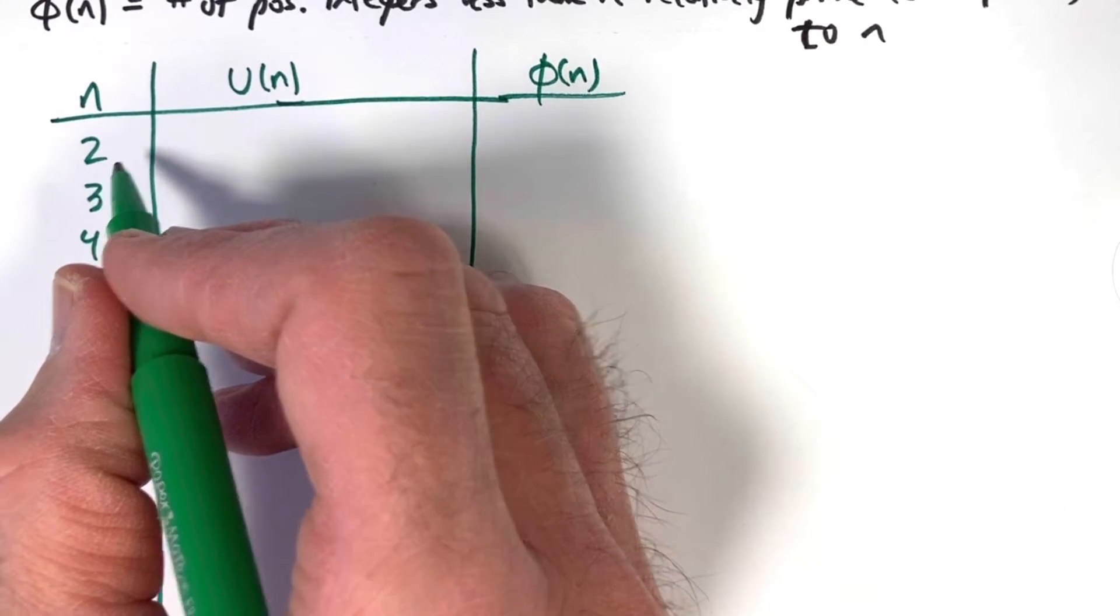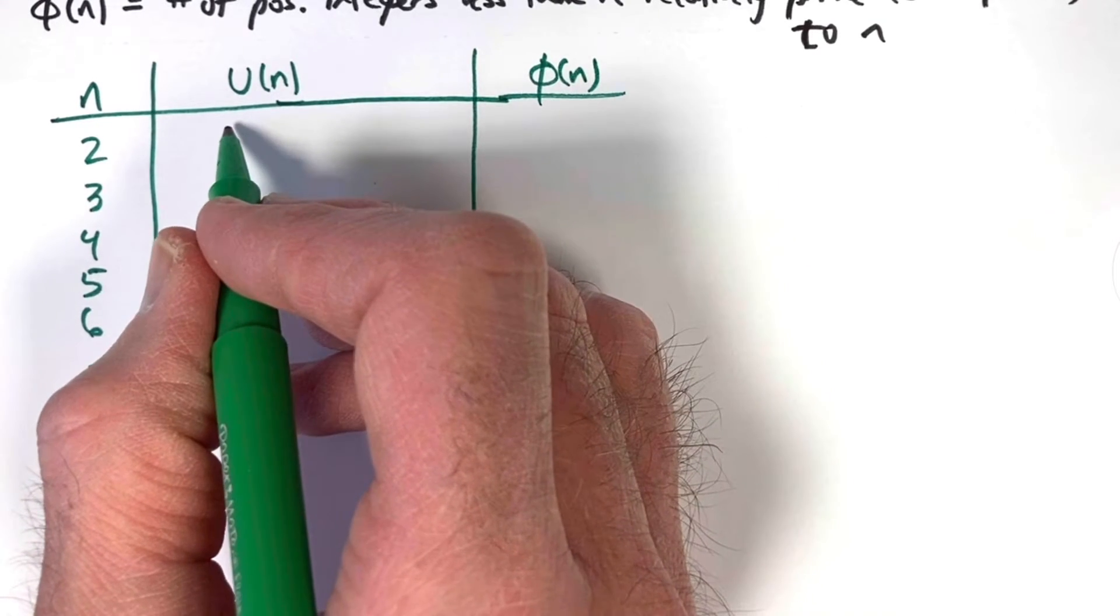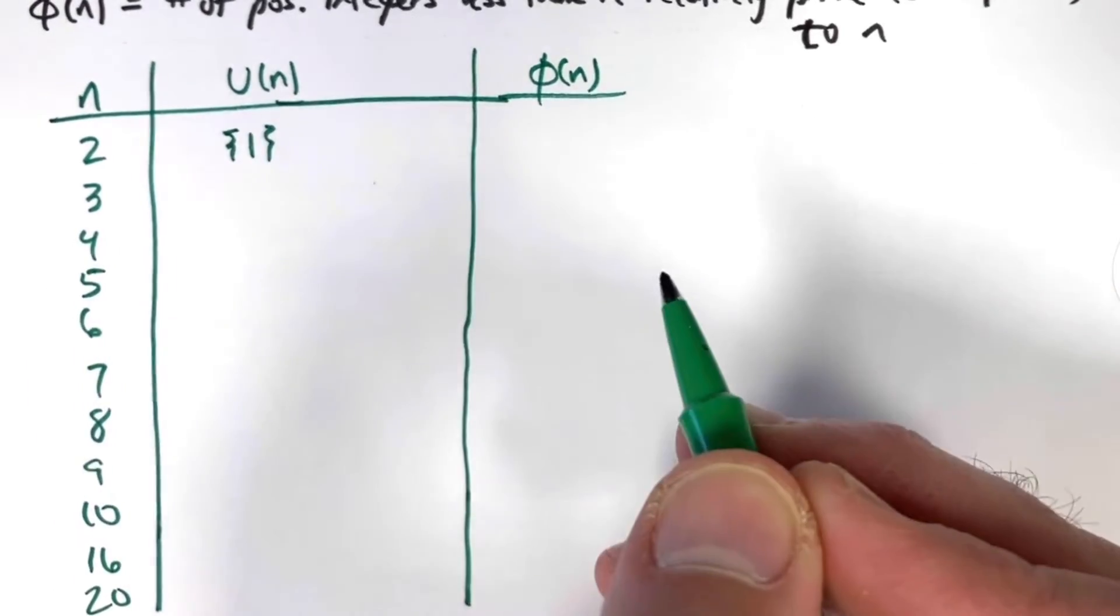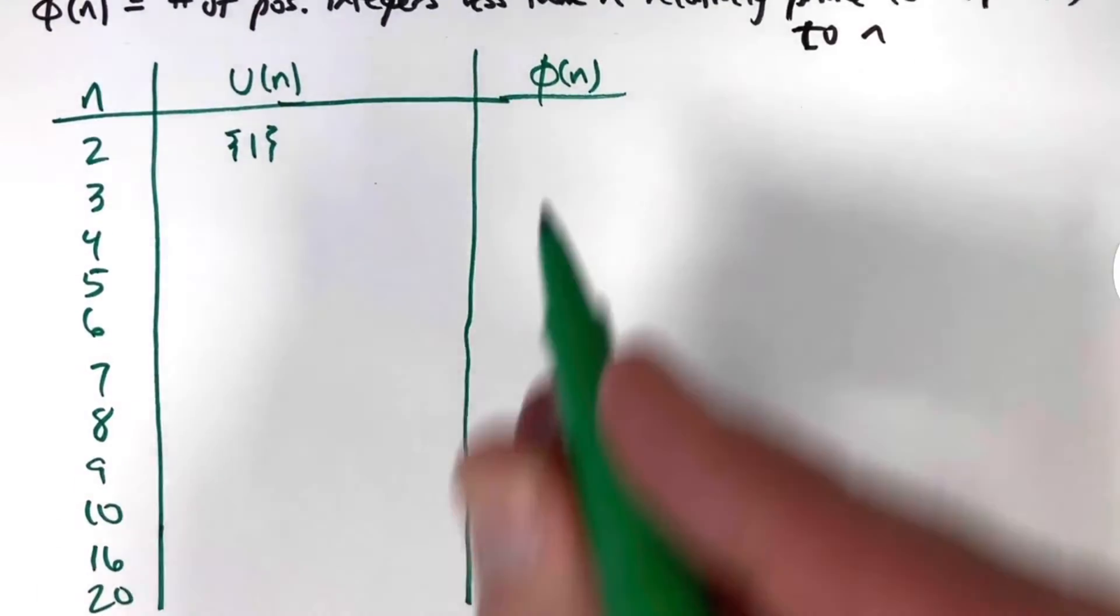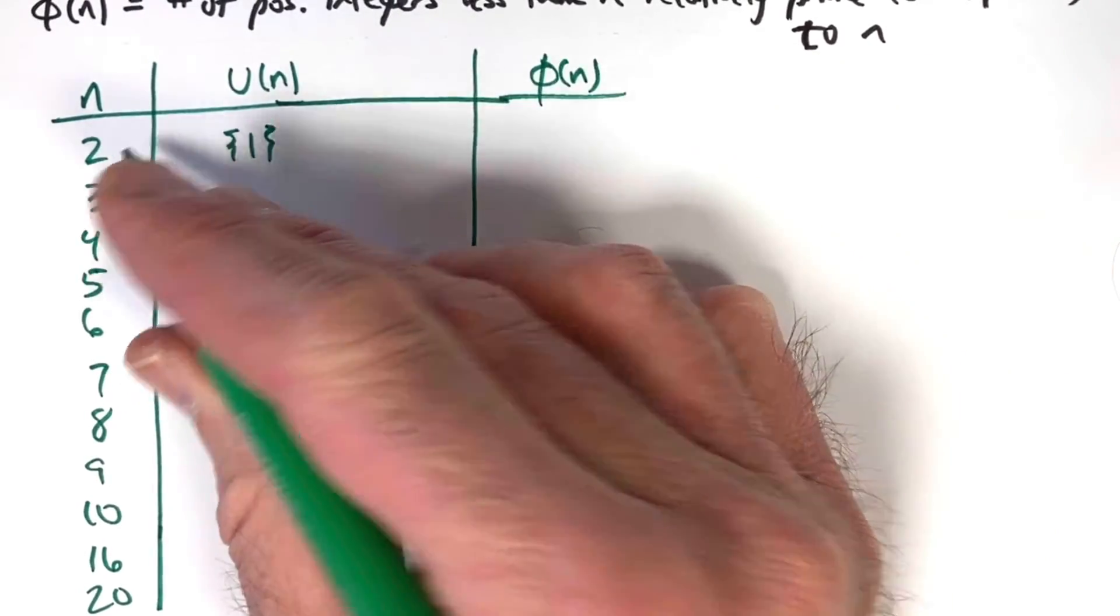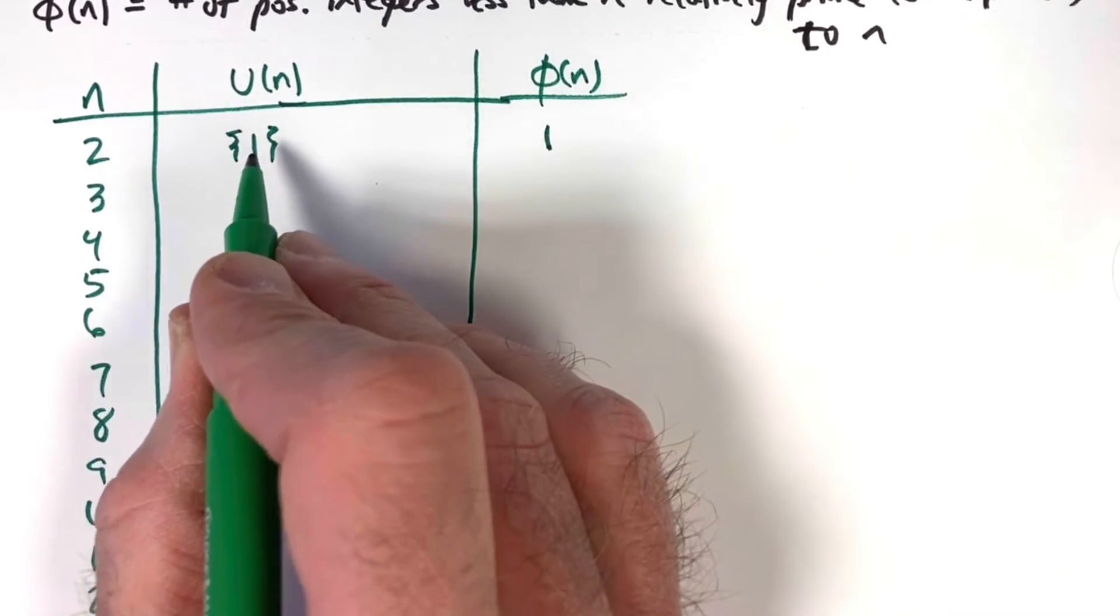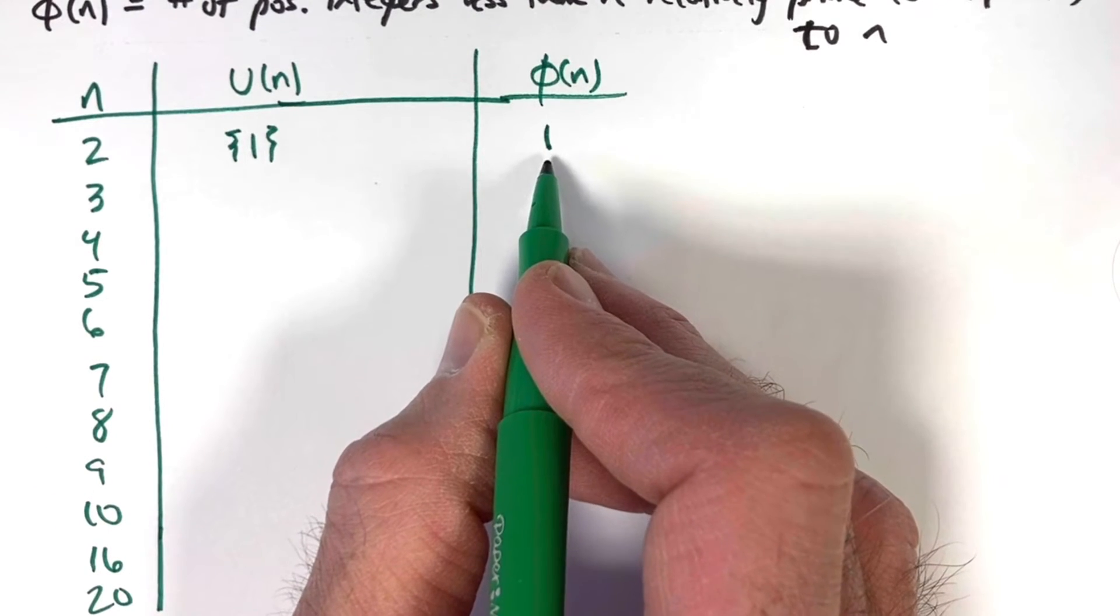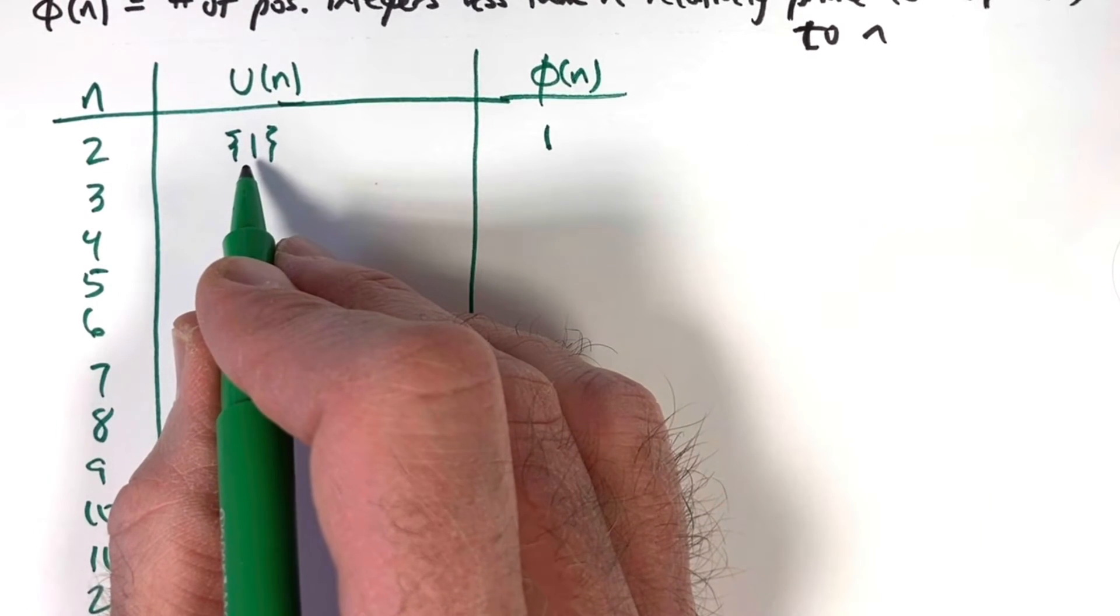We start with n = 2. What is U(n)? What are the positive integers less than 2 that are relatively prime to 2, that do not have 2 as a prime factor? Well, 1 is the only possibility. In fact, 1 will be in all of these sets. Since there's only one number in this set, φ(2) = 1. We're counting the number of elements in this set.